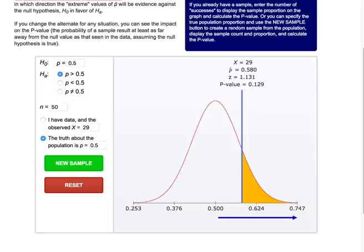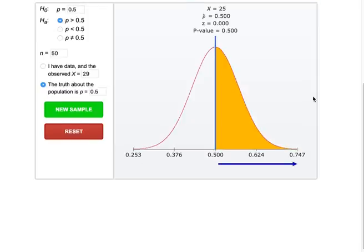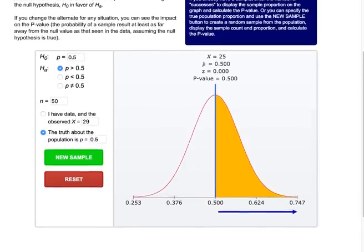And then we need to click on new sample and a random sample of size 50 will be generated or in our case a fair coin will be flipped 50 times. We are shown the results and we can see whether we would correctly fail to reject H0 or incorrectly reject H0.